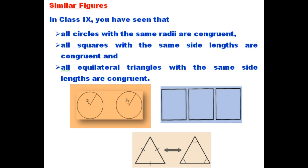Now we will see similar figures. In Class 9 you have seen that all circles with the same radius are congruent. See the picture: two circles having the same radius are congruent because shape and size are same. Similarly, all squares with the same side length are congruent - the side of the square should be same.